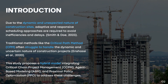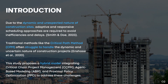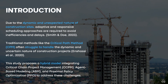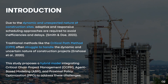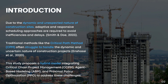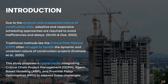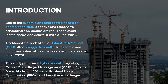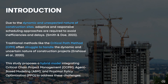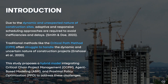The dynamic and unpredictable nature of construction projects often leads to inefficiencies. Traditional methods like the critical path method struggle under these conditions. This research explores a novel hybrid approach by integrating critical chain project management with agent-based modeling and proximal policy optimization to create a more adaptive project scheduling model.